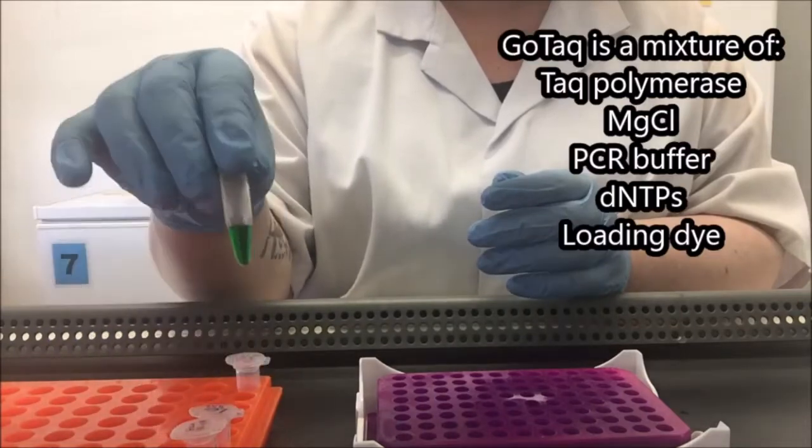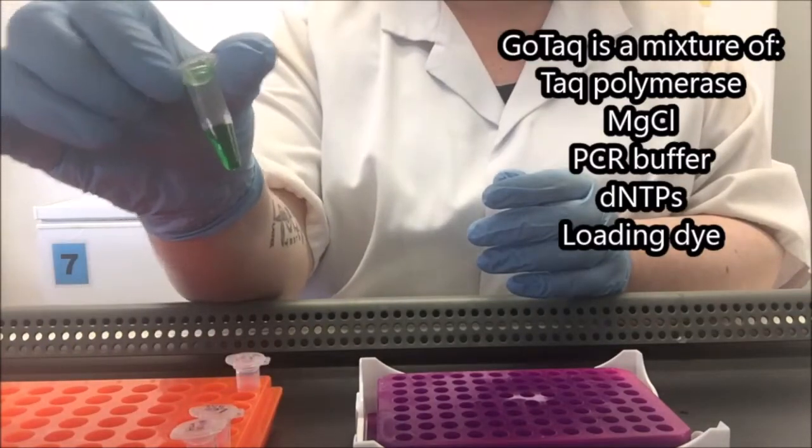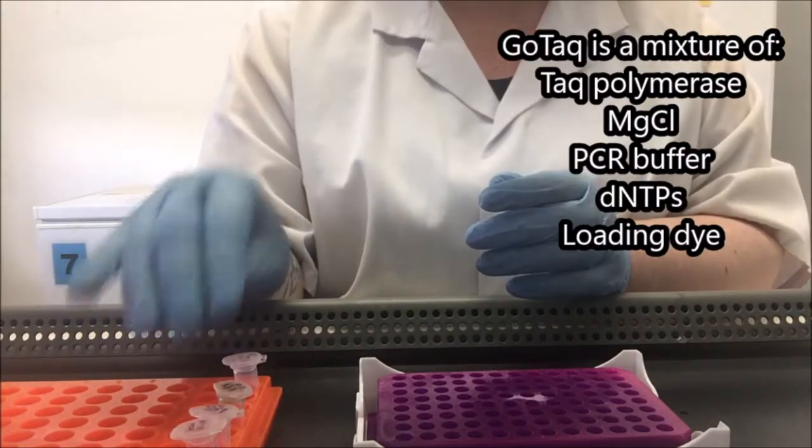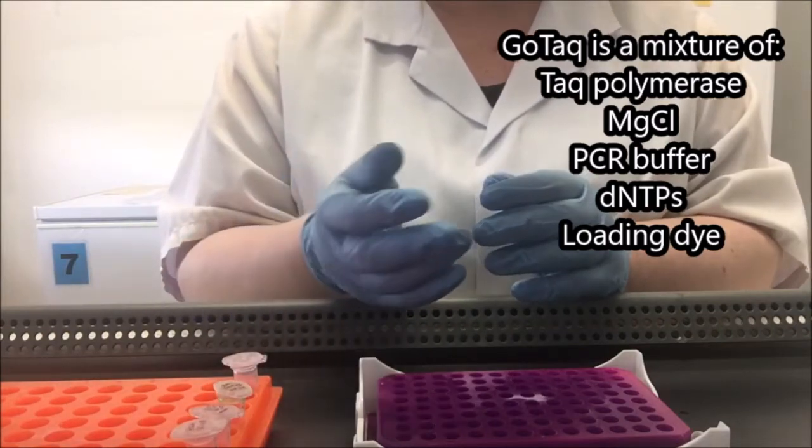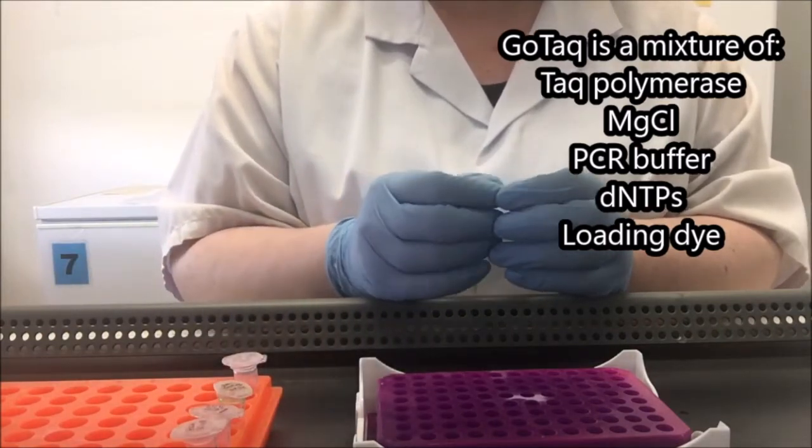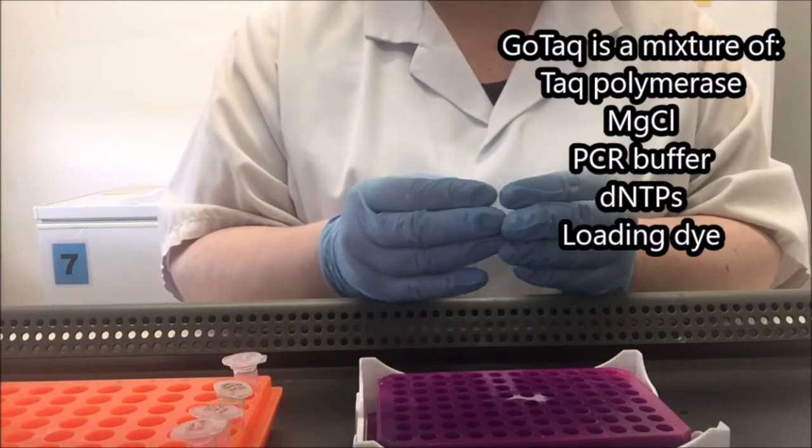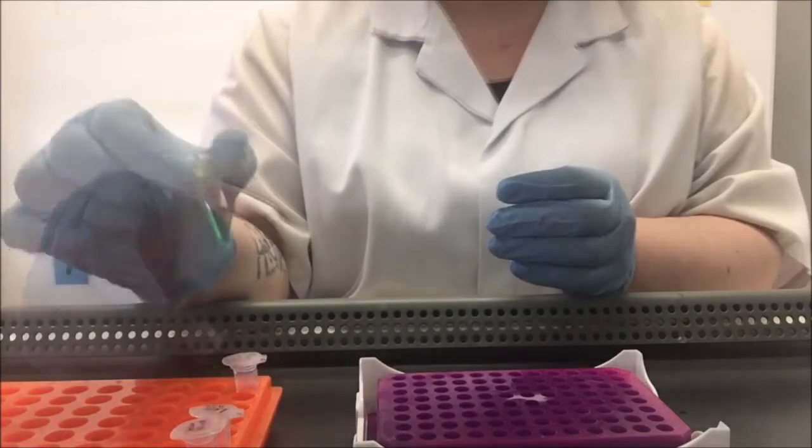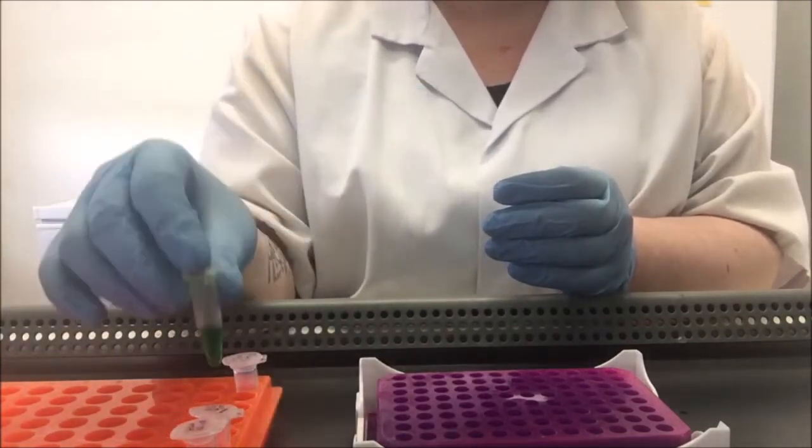In this case, I'm using GOTAC, which is this green colour. This is a master mix. So in addition to being TAC polymerase, it contains dNTPs, magnesium chloride, buffer, and a loading dye that will become important in a later step.